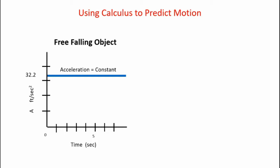Okay, we'll be using some basic calculus to predict the motion of the free-falling ball. On the left, we have a plot of the acceleration of the ball as it falls. Now recall that a free-falling object accelerates at a constant rate. That's 32.2 feet per second squared.